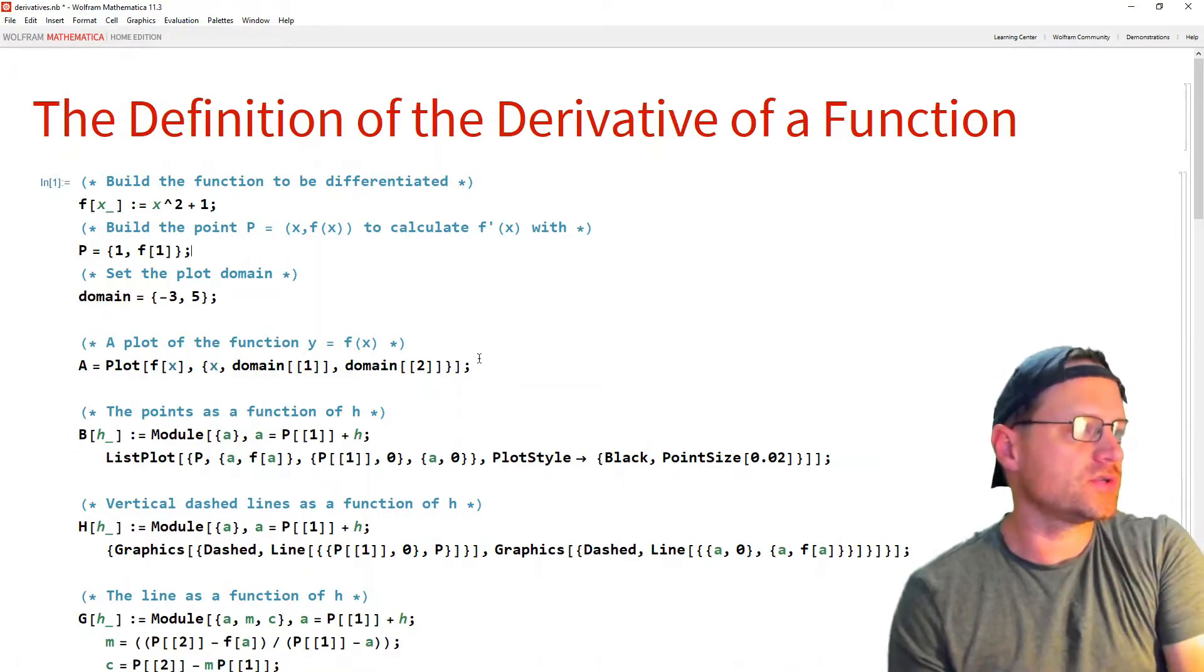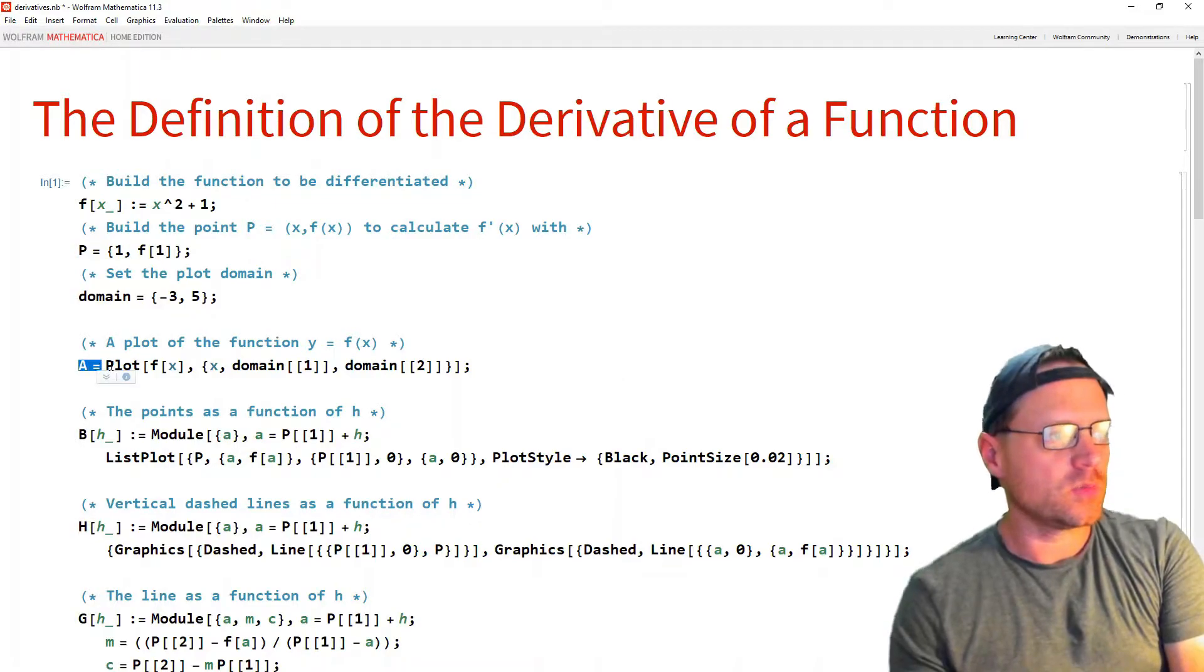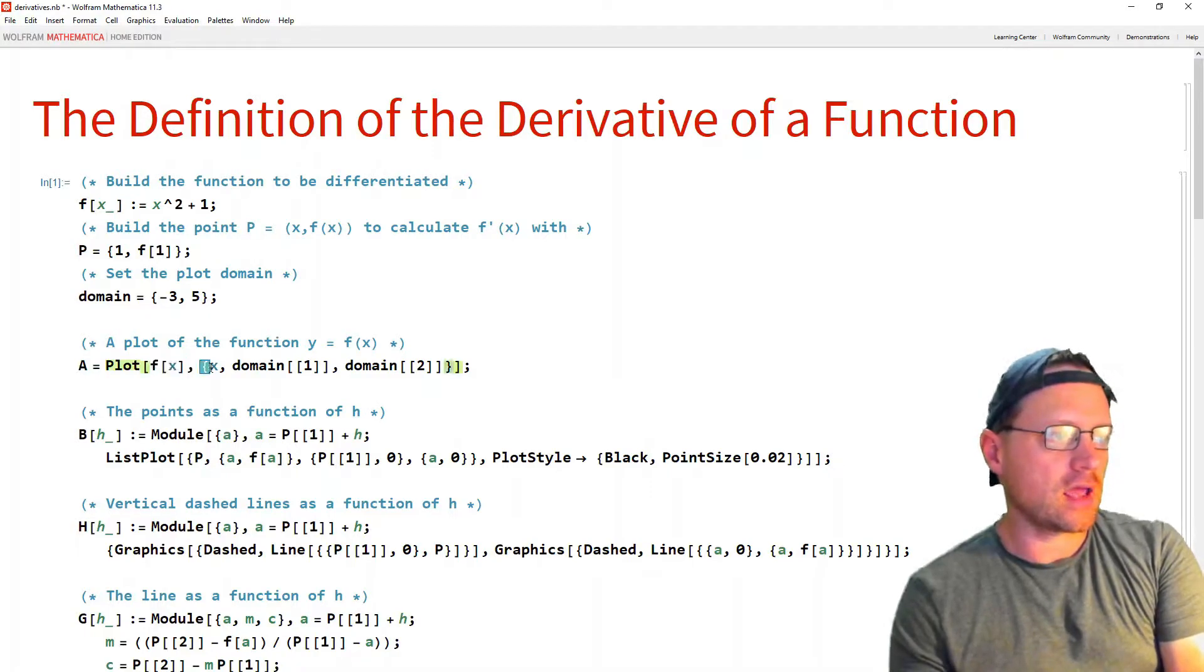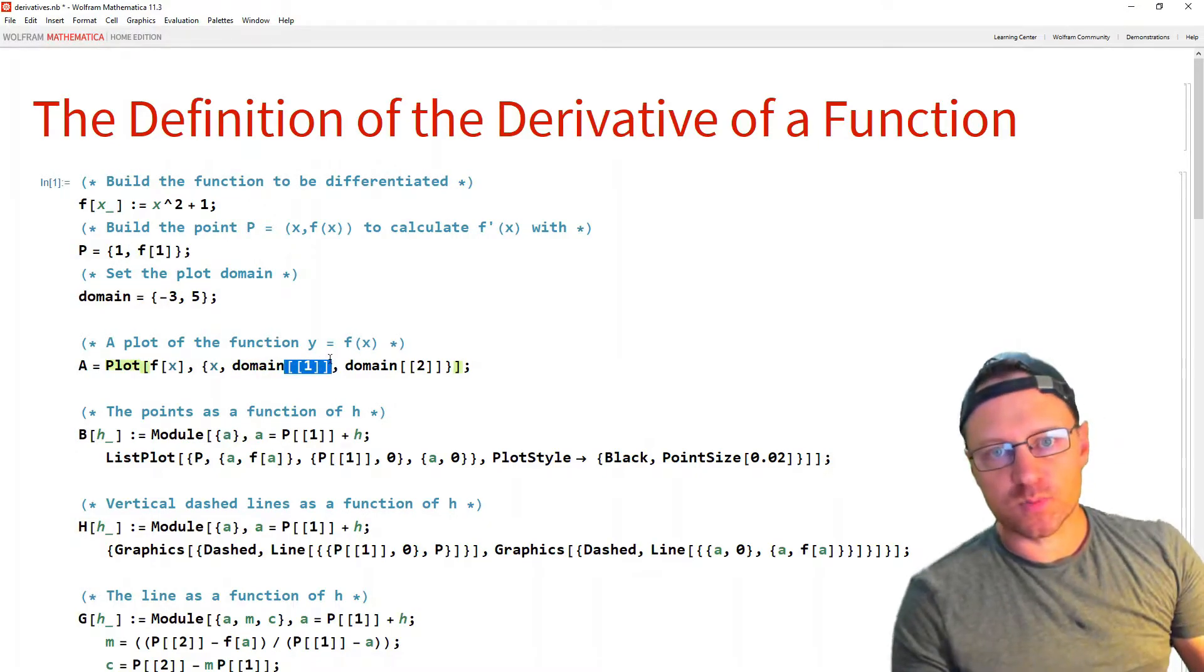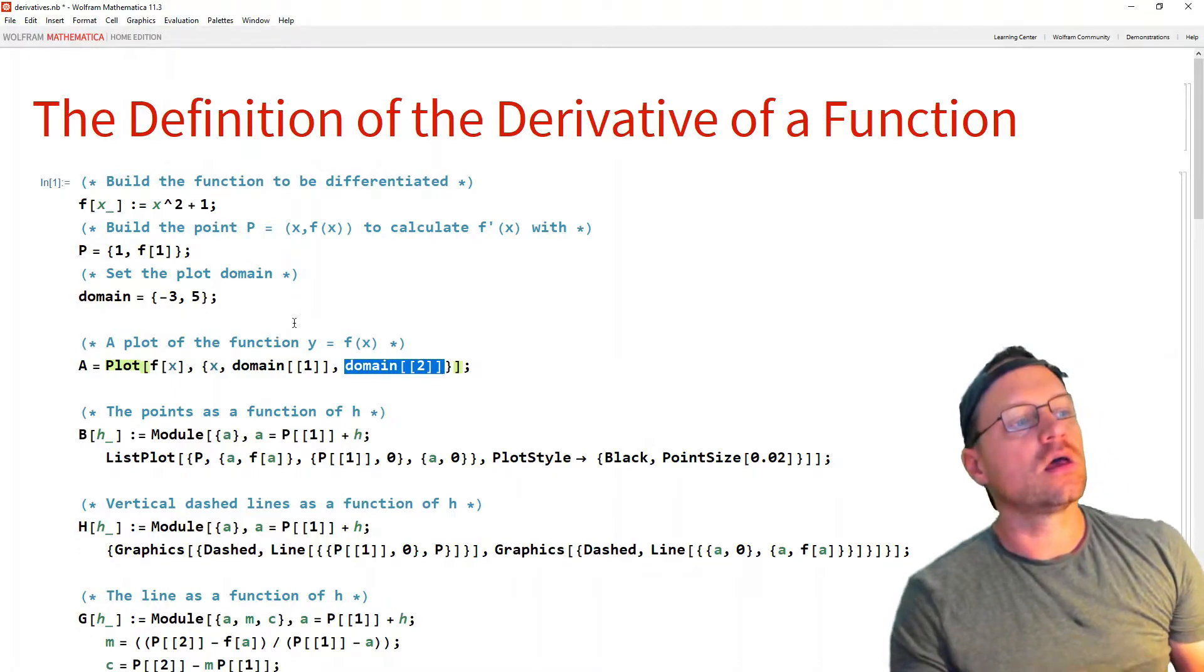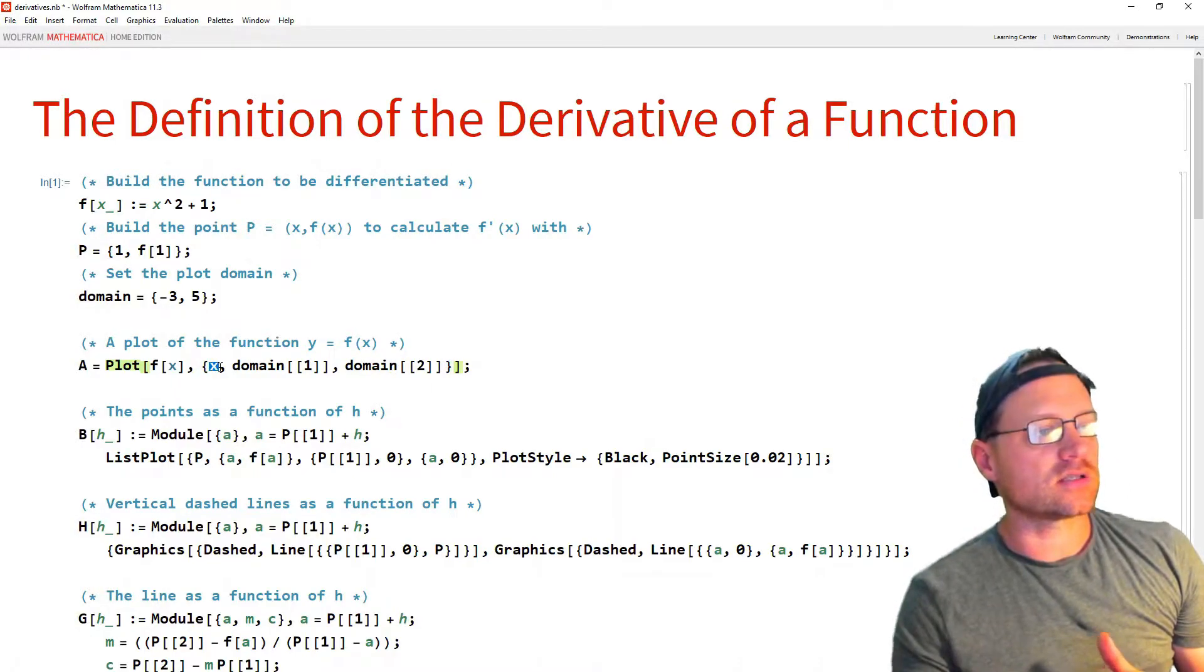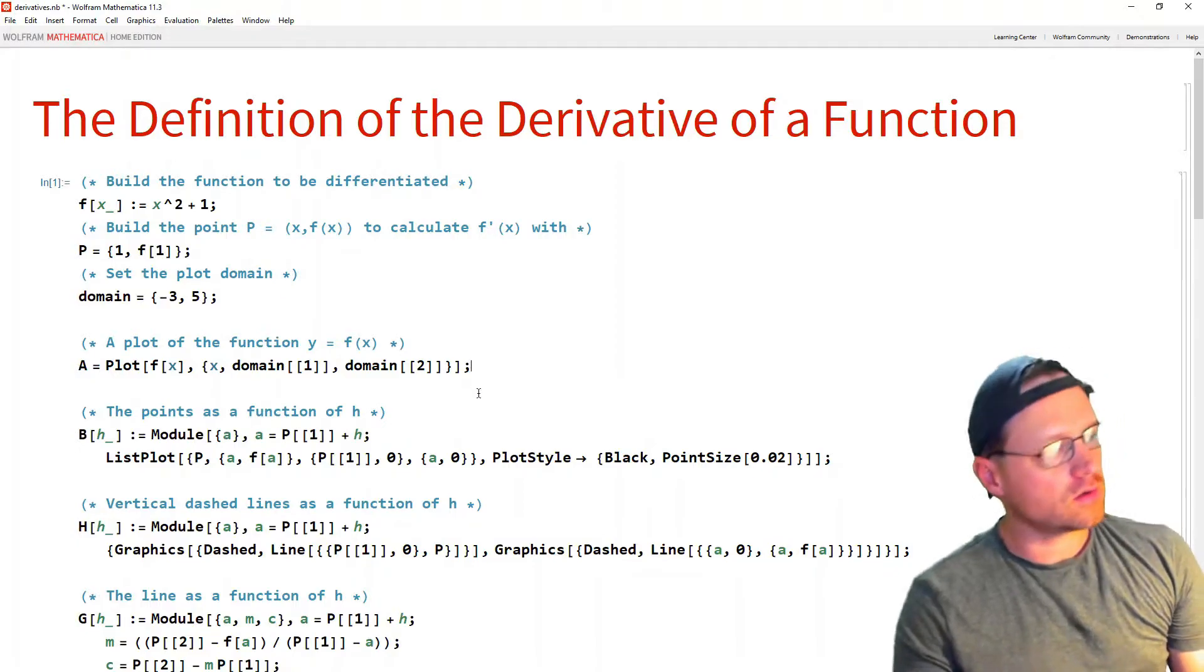So next we want to just write a plot or build a plot. We're going to call this uppercase A. So build the plot that consists of the plot of f of x and x ranges from the first point of the domain. So this is indexing, pulling out the first point of the domain, pulling out the second point of that plot domain. And so x is ranging from this point to this second point. So that will build a plot. Now I won't show you that. You can run that yourself.